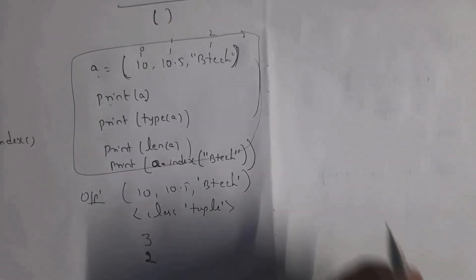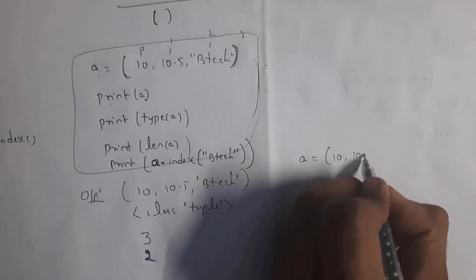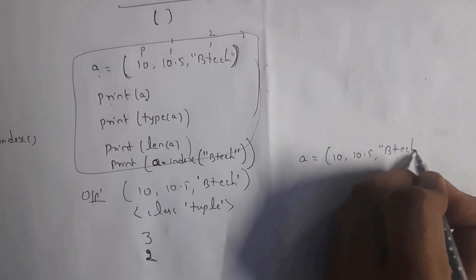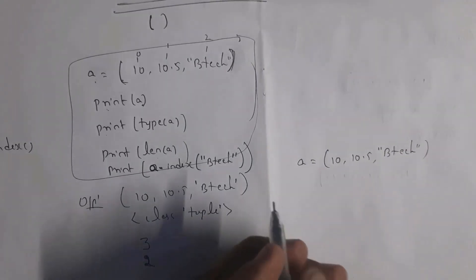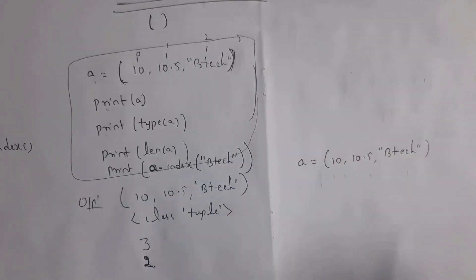Example: let us consider one tuple like a equals (10, 10.5, 'btec') where we need to represent tuple in normal brackets. Now I want to copy this tuple to another variable that is b, so just write here b equals a. That mean I am copying this tuple to this variable b.